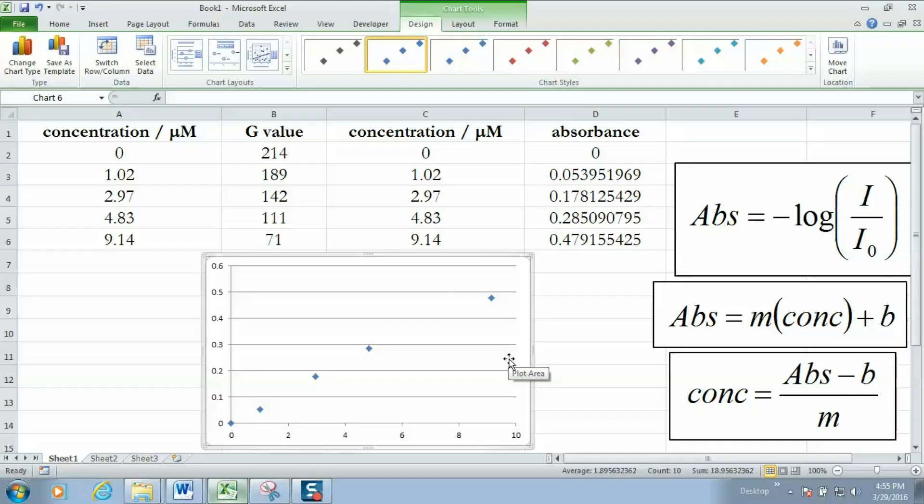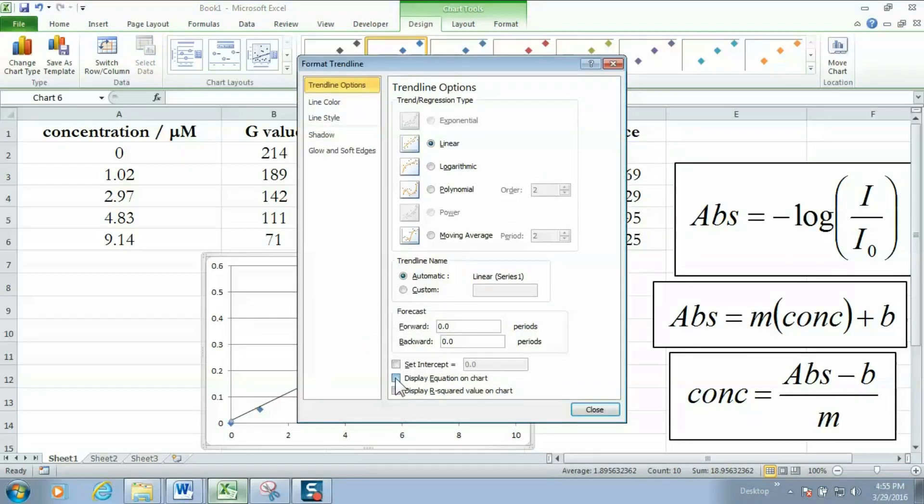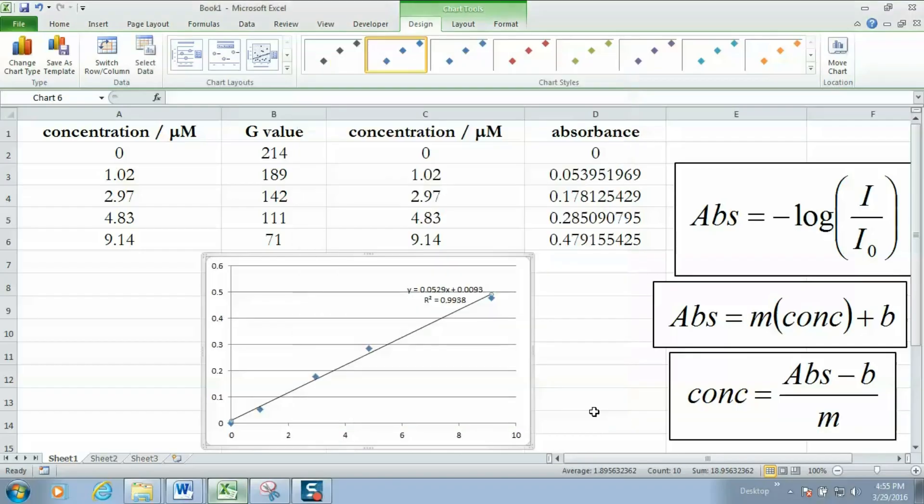I want to know what the equation for this line is. So I'm going to right click on any data point. I'm going to add a trendline. Display the equation on the chart and also the r squared value. The closer that is to one the more linear the fit is. And if I look at my equation for the line I see I have an r squared value of 0.9938 which isn't too bad.